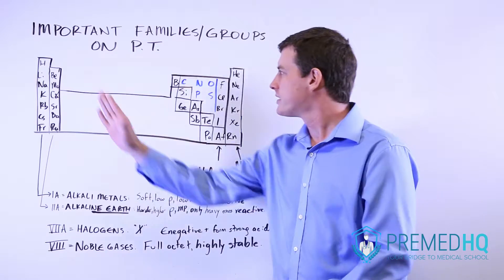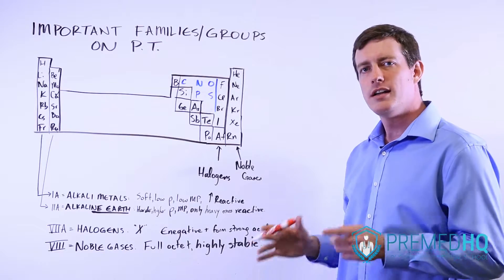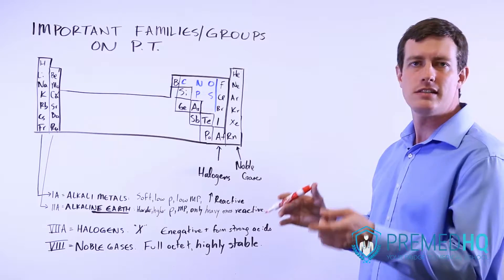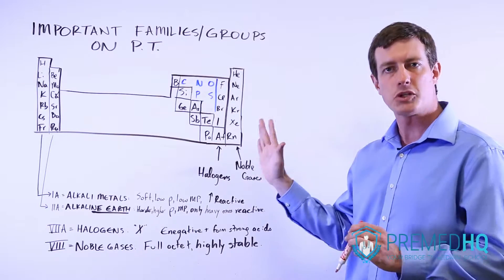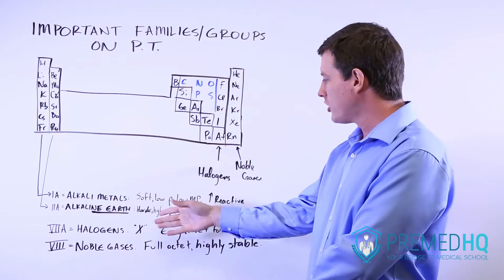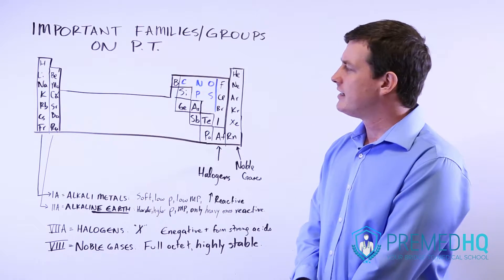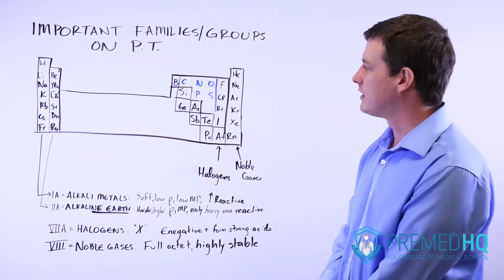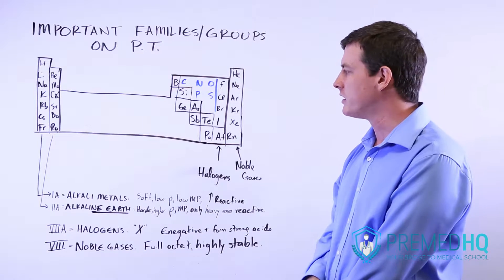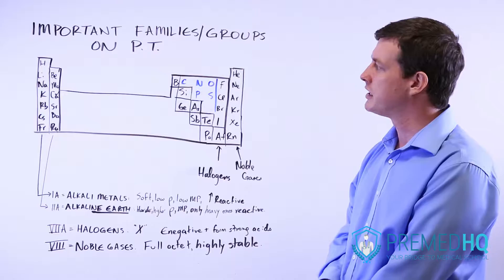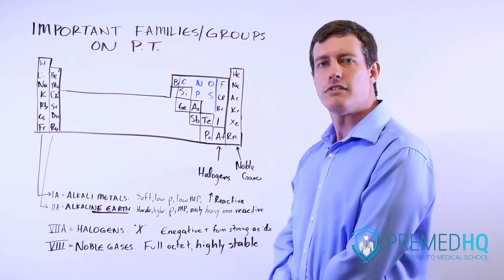The second column is known as the alkaline earth metals. If you have trouble remembering which name refers to which, just note that it's in alphabetical order — alkali comes before alkaline, so that's how you remember which is the first column and which is the second. The alkaline earth metals are harder, have greater density and a greater melting point than the alkali metals, and are not as reactive. Only the heavier ones — calcium and down — tend to be fairly reactive. These two columns are important because they only need to lose one or two electrons to bond ionically.